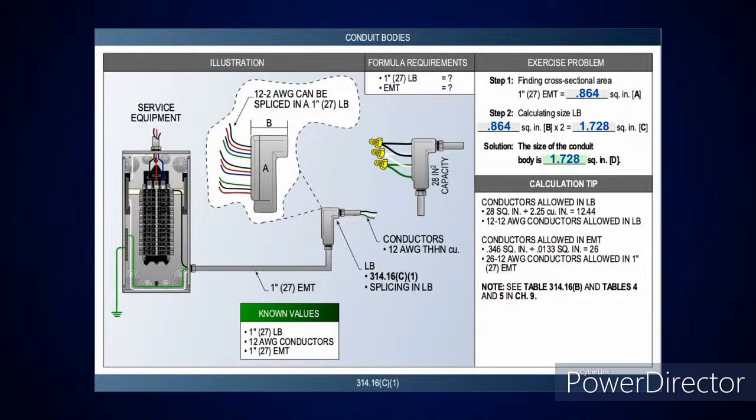You're going to go over to Chapter 9, Table 4. In this case, we're doing EMT and getting the square inch of the EMT, which is 0.864 square inches. Then you just multiply it by two. That'll tell you what you need for making those splices and for the size of that conduit body, which is going to be 1.728 square inches.